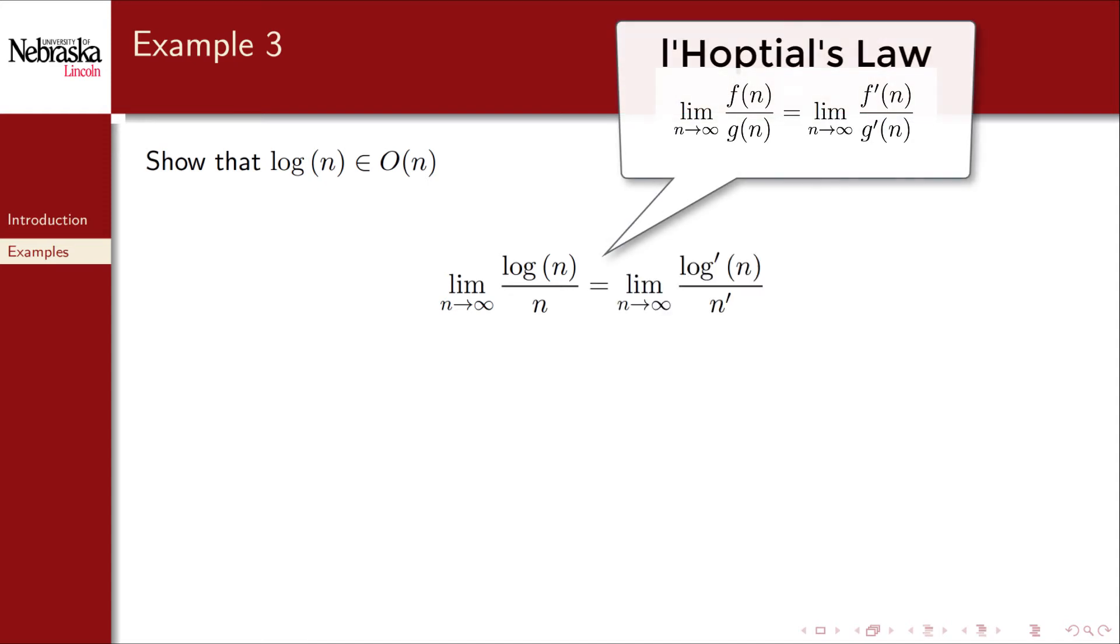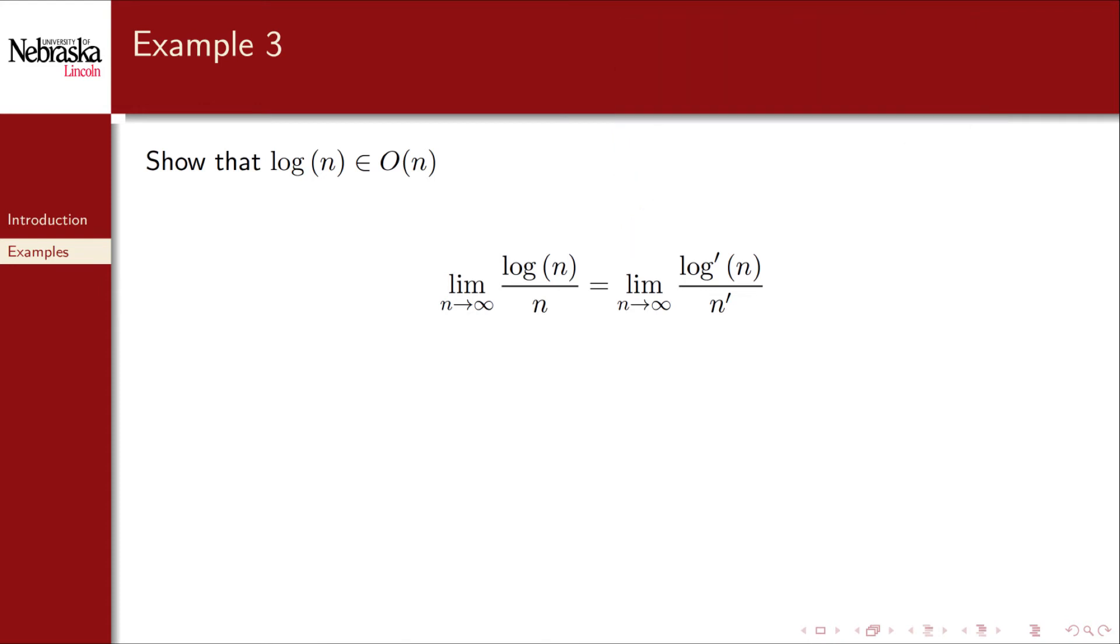So we can apply L'Hopital's rule and take the first derivative of each function. The derivative of log base 2 can be done by converting it to base e, that is the natural logarithm, first. After simplification, we observe that the limit converges to zero. And so log of n is Big O of n.